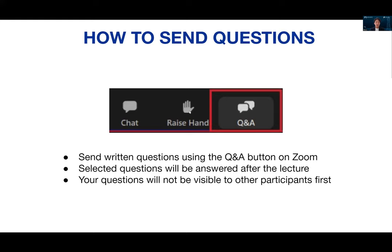Your questions will only be visible to the host at first, but will be shared with the rest of the participants if they're selected. Also, this webinar is being recorded and will be shared later. First, we have opening remarks from Daisuke Okanohara, CEO of Preferred Computational Chemistry, the company that provides our atomistic simulator, Matlantis, for material discovery.